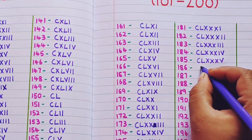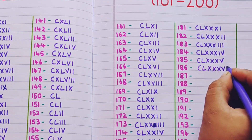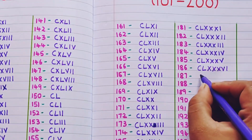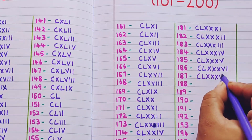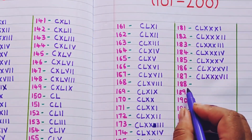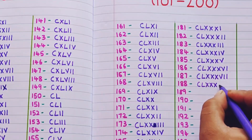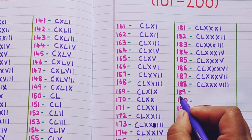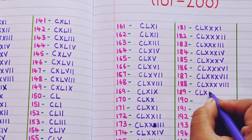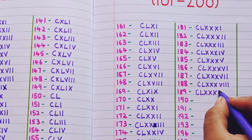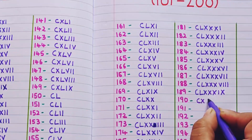186 is CLXXXVI, 187 is CLXXXVII, 188 is CLXXXVIII, 189 is CLXXXIX, 190 is CLXXXX.